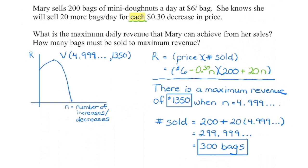So there are two parts to this question. The maximum daily revenue is $1,350, and the number of bags sold to achieve that revenue is 300 bags. Remember: if the question asks for the price or number sold, take the appropriate bracket, substitute the N value in, and that gives you whatever you're being asked for.